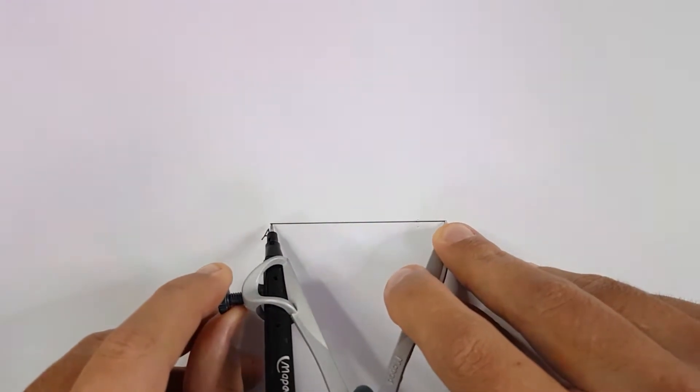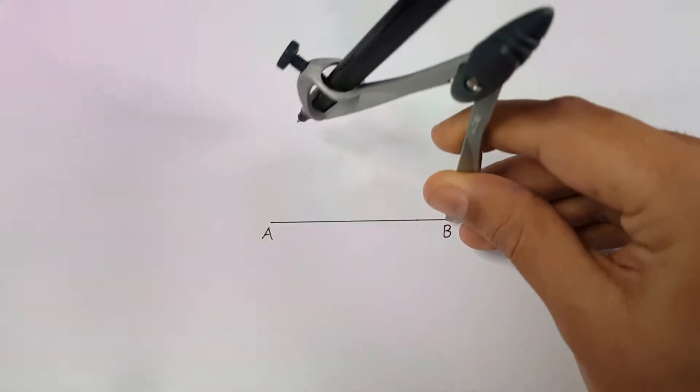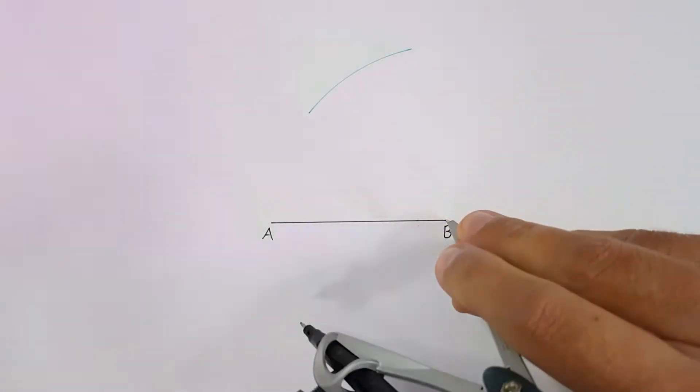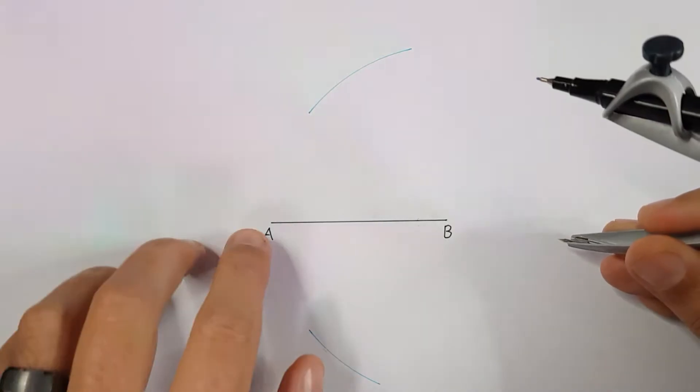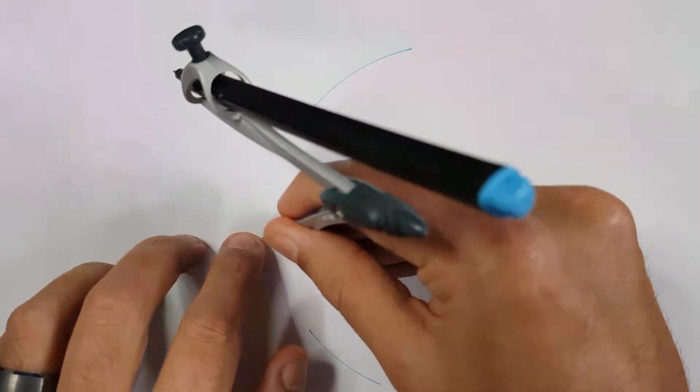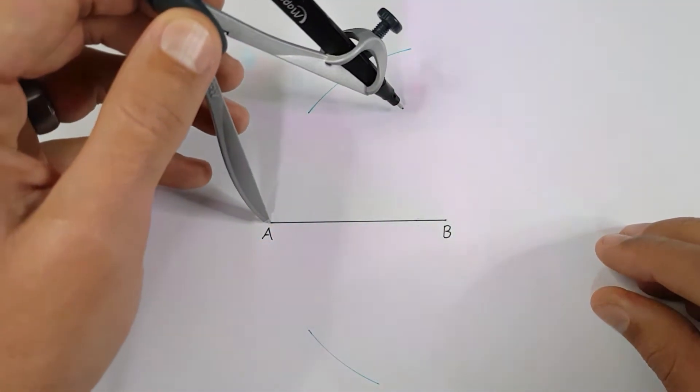Place your compass on point B and adjust it to the full length of the line. Draw an arc above and below the given line. I will now follow the same steps on point A. Draw an arc above and below the given line.